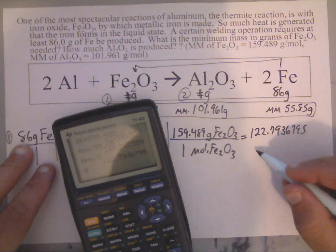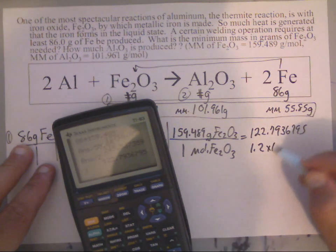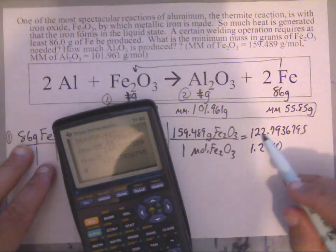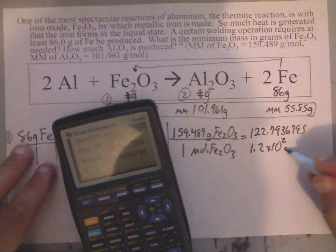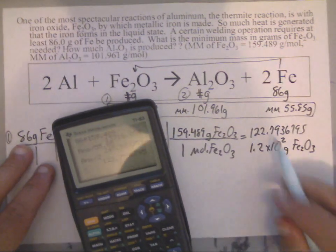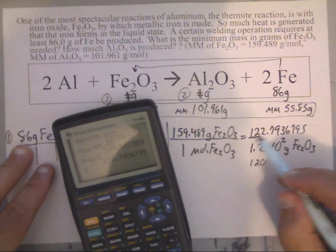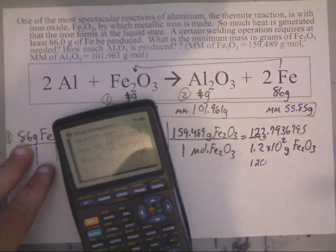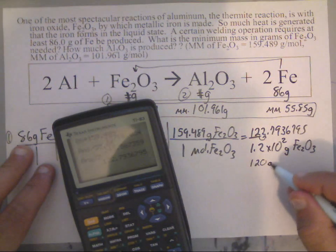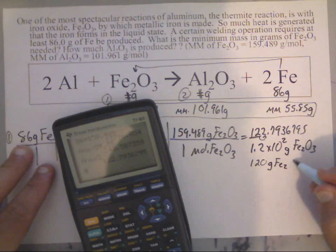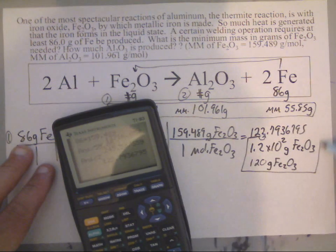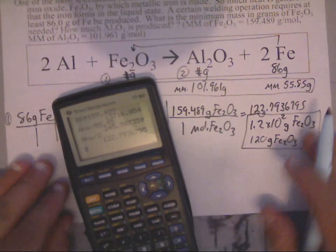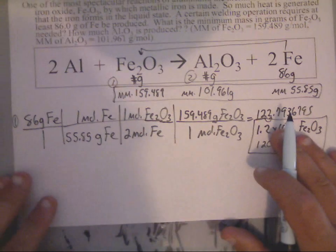So I'm going to write it down this way: I can write it as 1.2 times 10 to the second grams of Fe2O3, or I can get by just by writing 120, because my first two sig figs are right here and I can't round 122 to 130. So I'm just going to leave it 120 grams of Fe2O3. I will take either one of these two answers. Now that's the first part. Now let's do the second part.